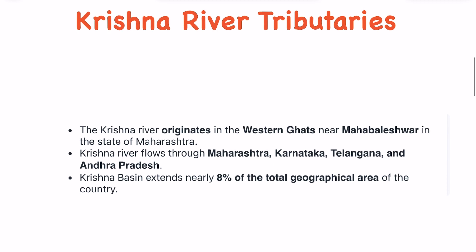The Krishna river originates in the Western Ghats near Mahabaleshwar in the state of Maharashtra. It flows through Maharashtra, Karnataka, Telangana, and Andhra Pradesh.